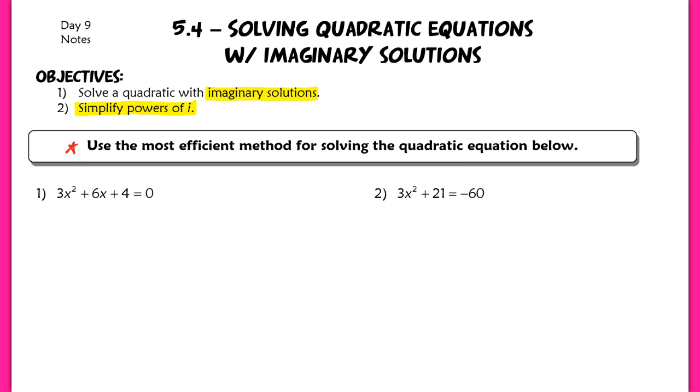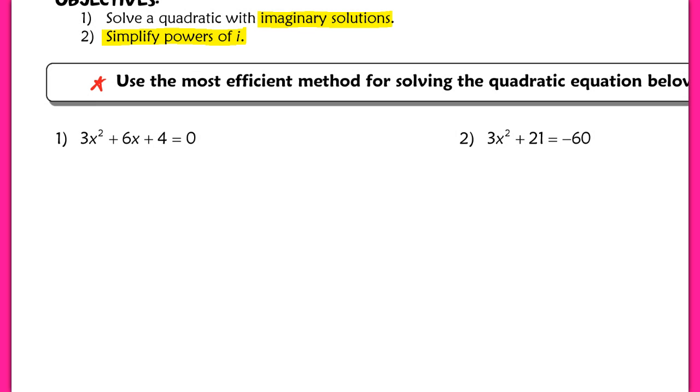When I look at number one here, I'm going to look first, can I use the square root method? Since I have a linear term, I cannot. I'm also going to look to factor, so I'm looking for two numbers whose product is 12 and sum is 6. When I look at this, I notice that there are no two numbers that will multiply to 12 and add up to 6, so that means that this is not factorable. I'm going to jump into the quadratic formula.